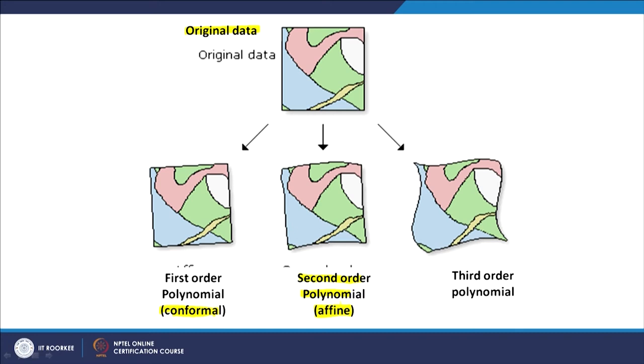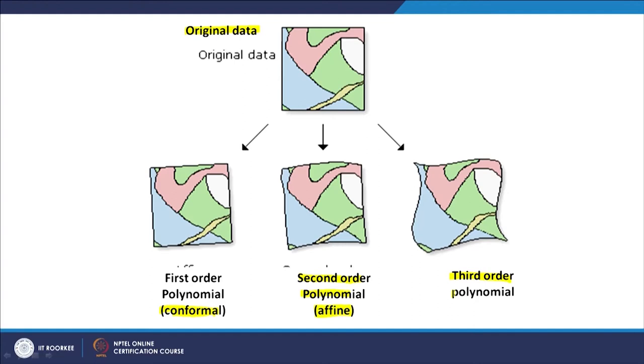If a transformation, rotation, change in scale, and warping are all needed — because the image is covering a large part of the earth representing its curved surface which we want to make flat — then all 4 requirements would require a third-order polynomial equation. Mathematically, some GIS software allows going up to even the 12th order, but in practice we do not really need to go beyond third order in GIS.